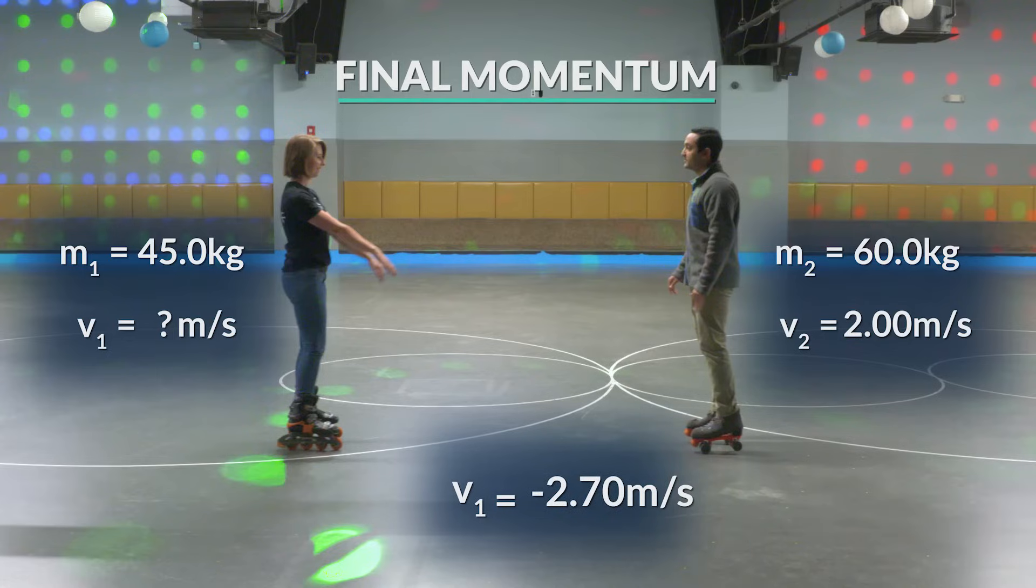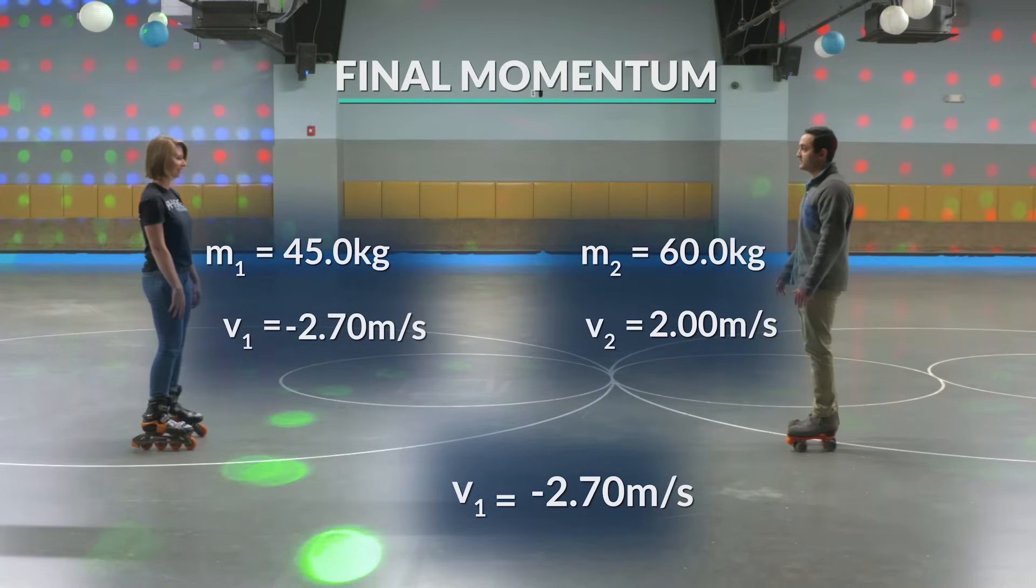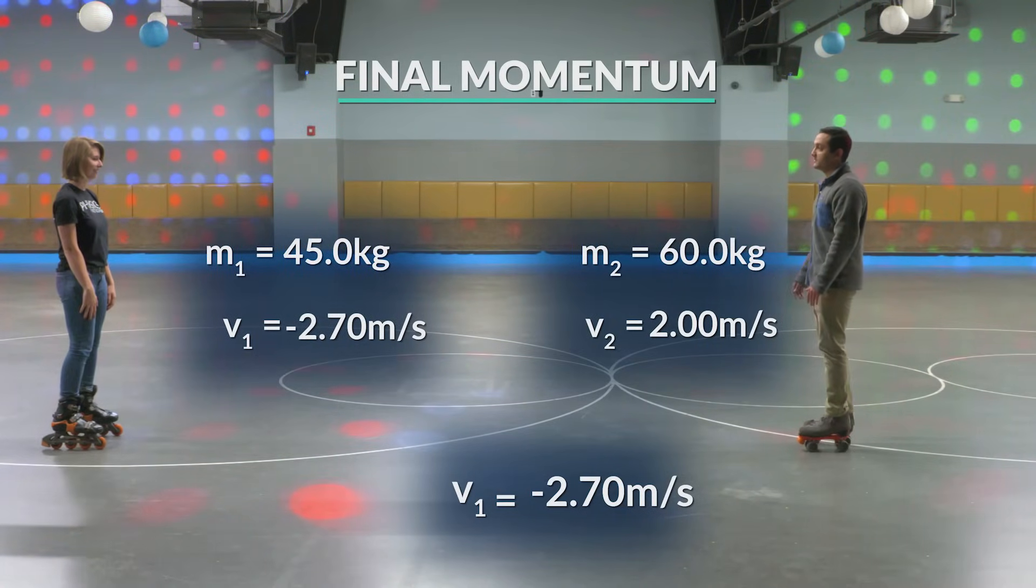So let's check. Does this answer make sense? Does the sign in front of Summer's velocity represent the direction of her motion compared to the direction of Turag? And secondly, does the value of Summer's speed compare reasonably to the value of Turag's speed? The answer to both of these questions is yes. Turag had a final velocity of positive 2.00 meters per second, and Summer's was negative 2.70 meters per second. The sign indicated the direction of motion, and when they pushed off of one another, they moved in opposite directions.